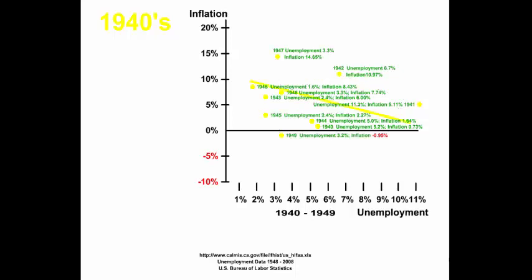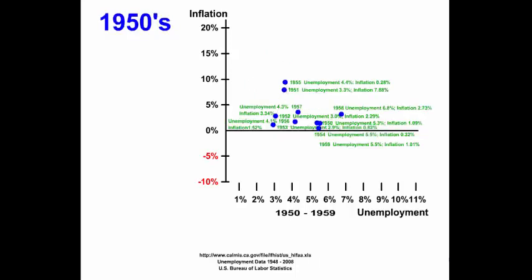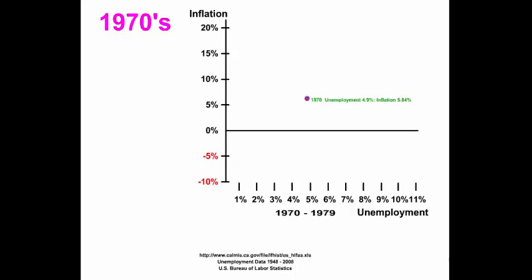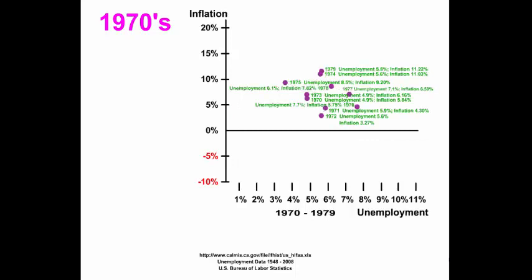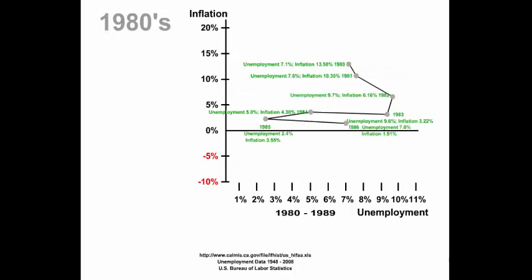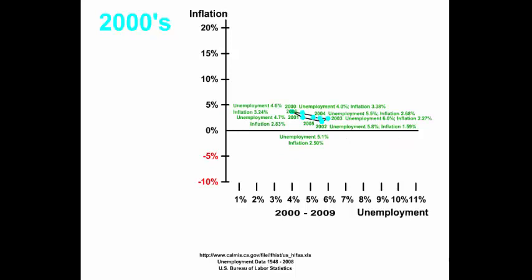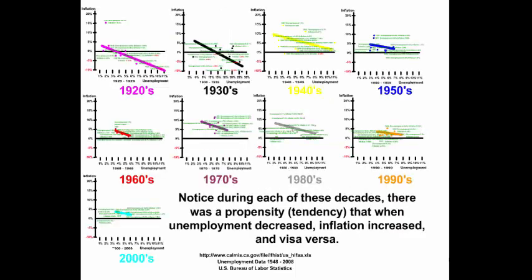There is a trade-off here in the 40s between unemployment and inflation. You can see the trend line here in the 50s, and then in the 60s, and in the 70s, the 80s, the 90s, and then the new millennium. Notice during each of these decades, there was a propensity or tendency that when unemployment decreased, inflation increased, and vice versa.